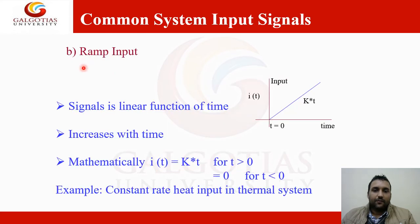Next is ramp input. Similar is linear function of time. It is increased with time. Mathematically, i(t), that is function of t, is equal to k into t for t greater than 0 and is equal to 0 for t less than 0. Example is constant rate, heat input in thermal system. This is graph for i(t) for t is equal to 0 to various time.